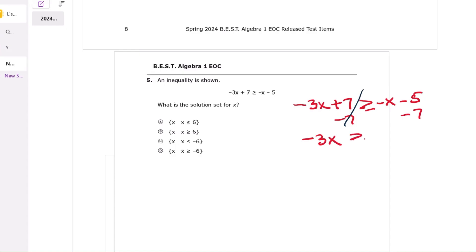Question 5. That gives negative 3x is greater than or equal to negative x minus 12. Step 2, add x to both sides. That gives negative 2x is greater than or equal to negative 12. Step 3, divide both sides by negative 2. Remember, when dividing an inequality by a negative, the inequality sign flips. That gives x is less than or equal to 6. Final answer, the solution set is all real numbers x such that x is less than or equal to 6. Therefore, the correct answer is choice A.